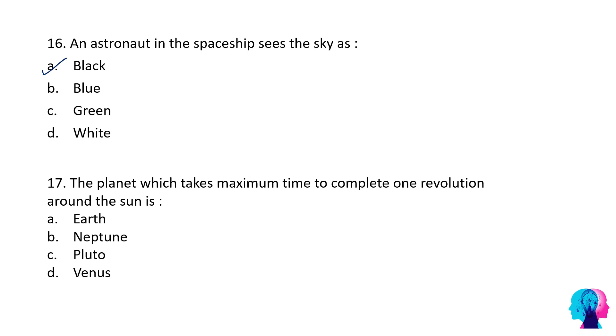Normally, how do we see the sky from the earth? We see it as blue, right? But in space, the astronaut would see it as black.